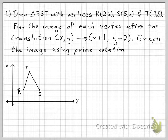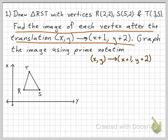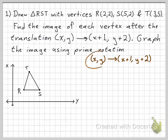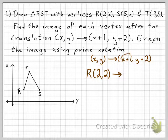I've moved this onto a new frame so I have more room to write — this is all just copied over. Now I'm going to find the image of each vertex after the translation (x,y) → (x+1, y+2). We have point R at (2,2). If R is (2,2), then what would R prime be if I have to add 1 to the x-coordinate?